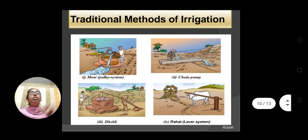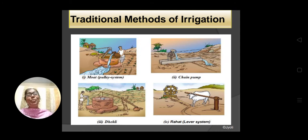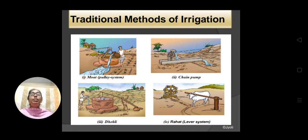Now, what are the methods of irrigation? Here you can see some traditional methods. In the first case, the moat pulley system — in my childhood, I have seen this system. One farmer had a field with a well nearby. From the well, with the help of a pulley, he was taking out the water and pouring it in the field.